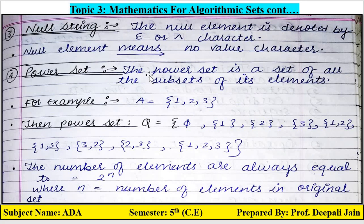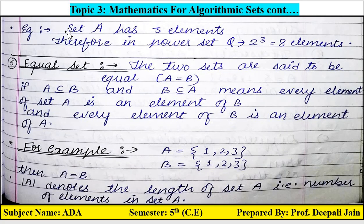So total 8 power sets are obtained. Now you can understand the definition: the power set is a set of all the subsets of its elements — all elements of the set form their subsets with all connectivity. Note: the number of elements in a power set is always equal to 2 raised to the power n, where n equals the number of elements in the original set. Here set A has 3 elements, therefore the power set has 2³ = 8 elements.